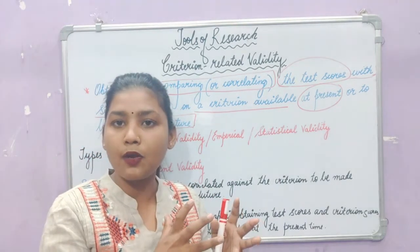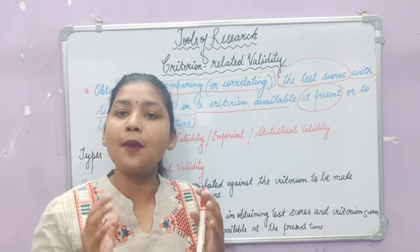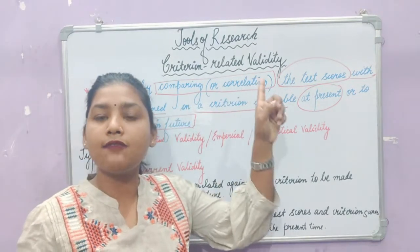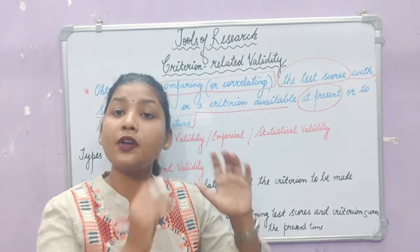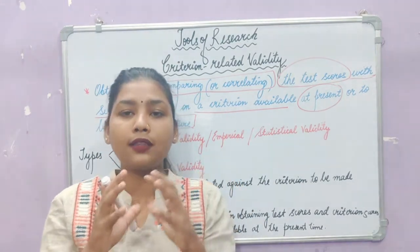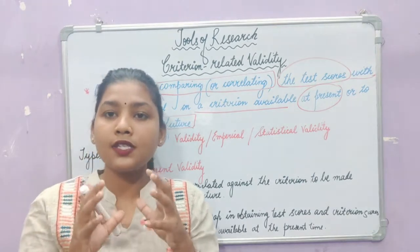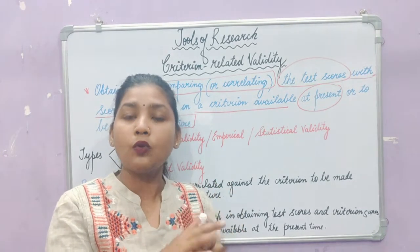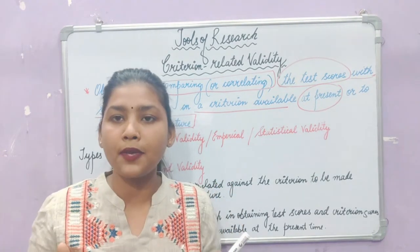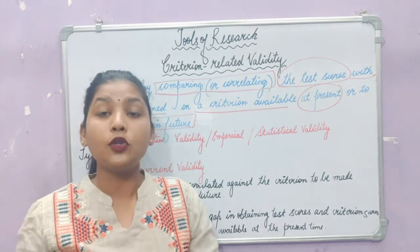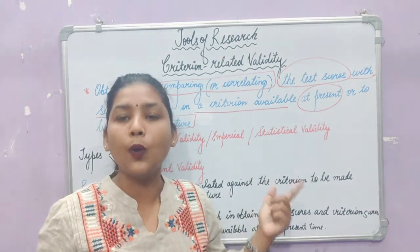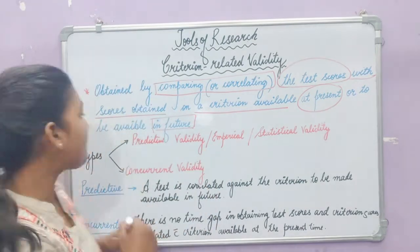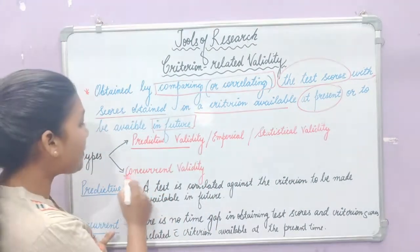If you compare the scores using a criterion, we use criterion-related validity. Criterion-related validity has two types: the first is predictive validity and the second is concurrent validity.